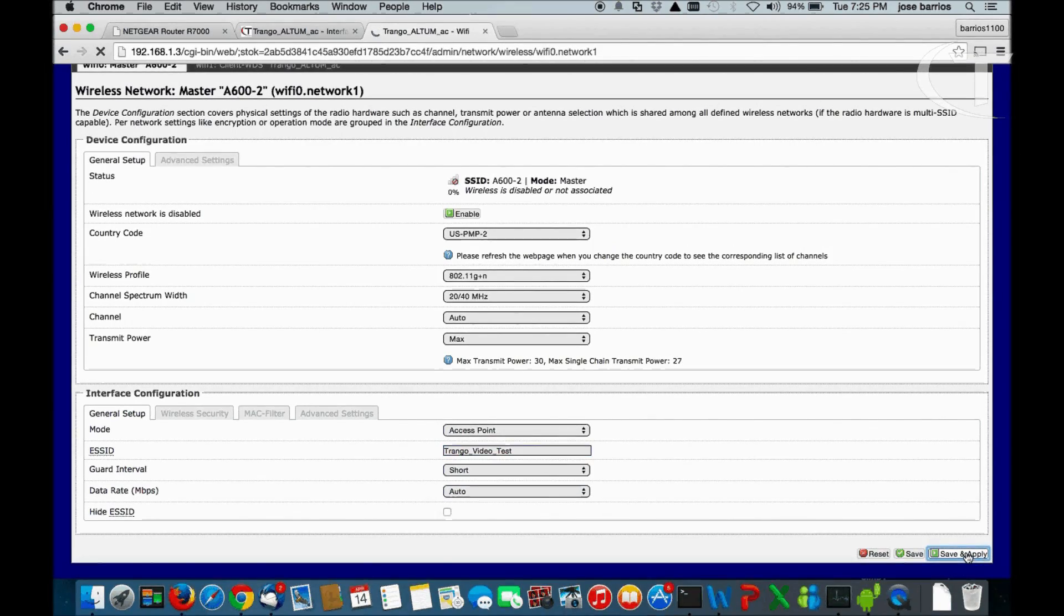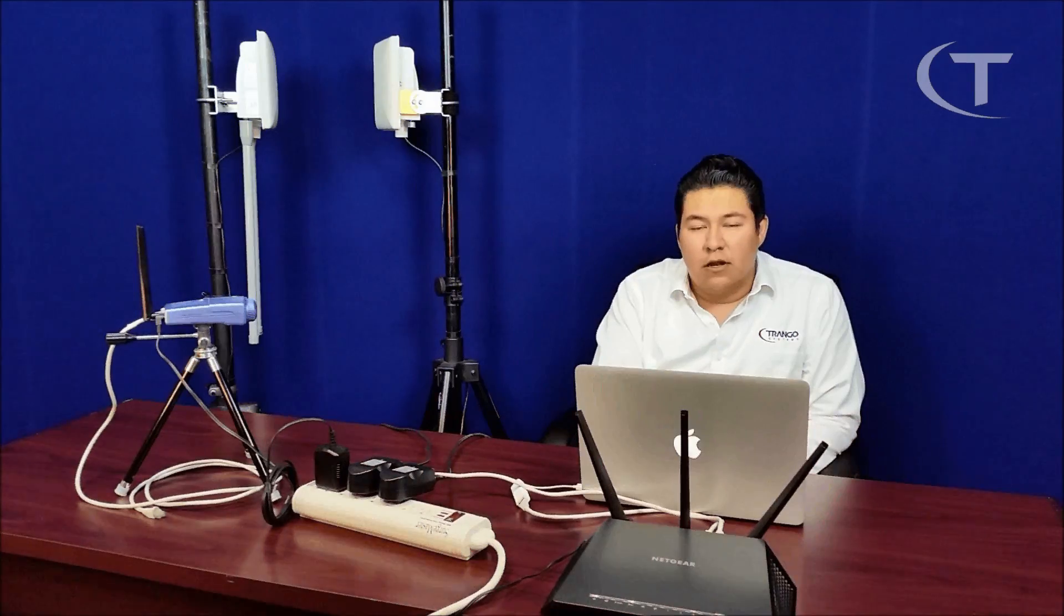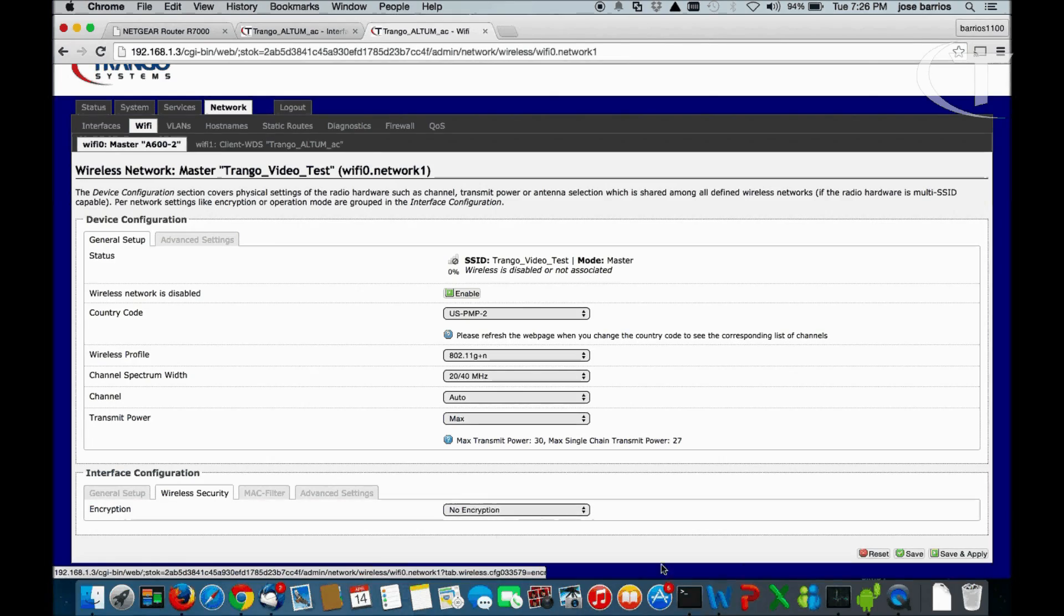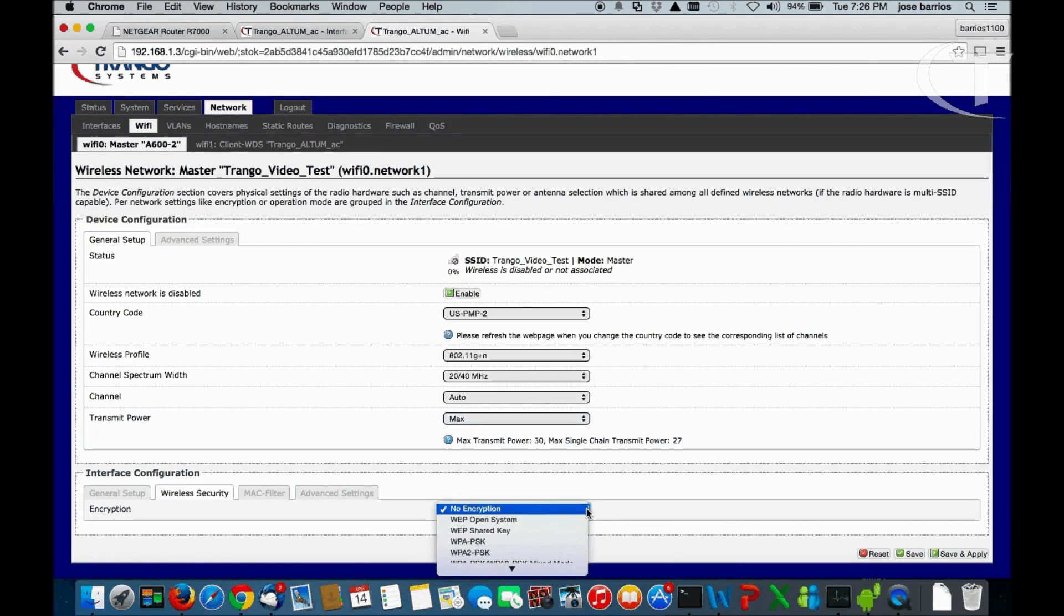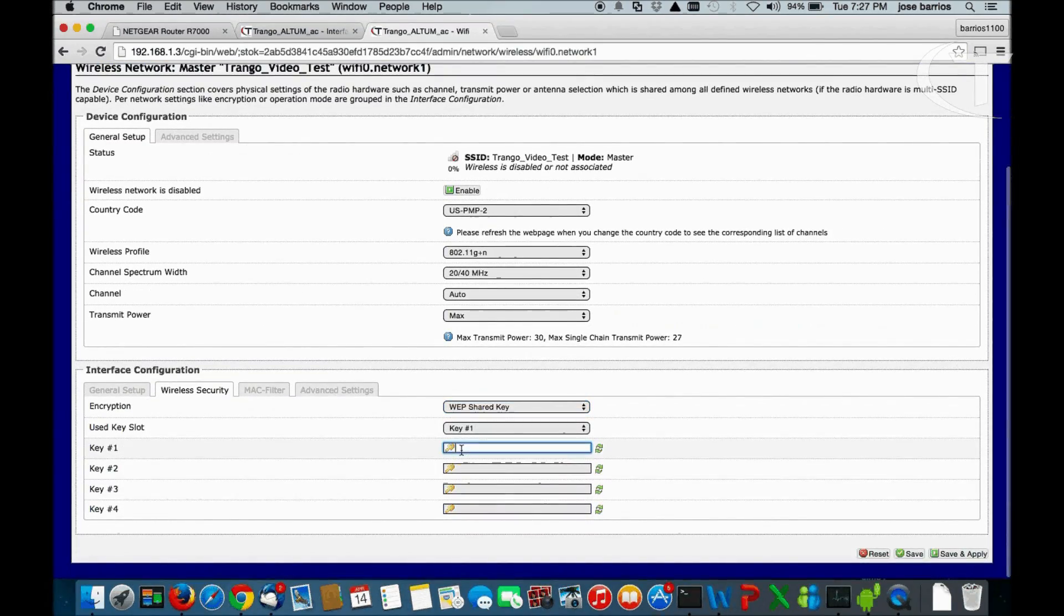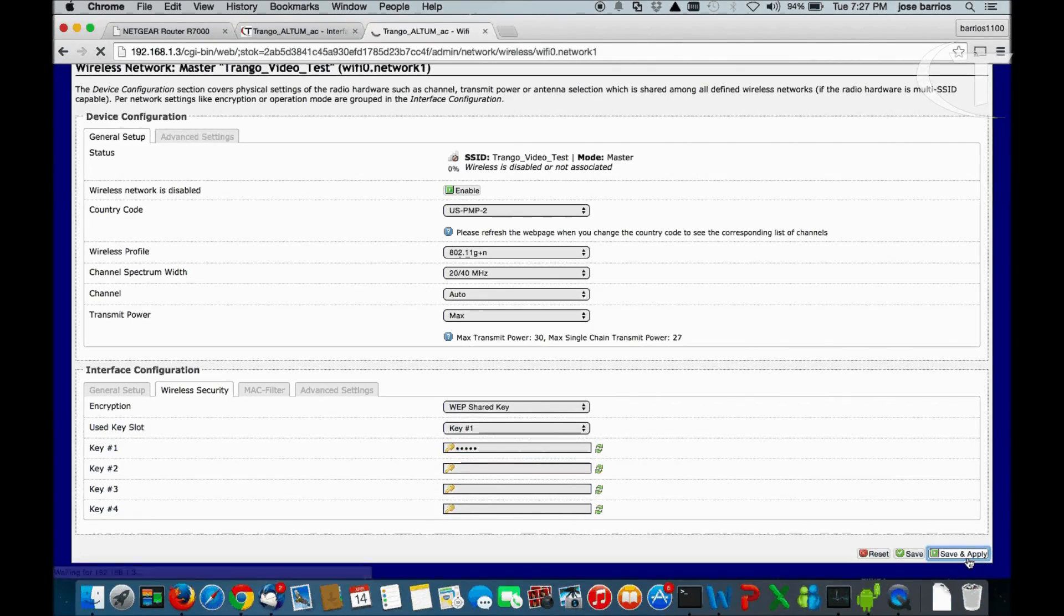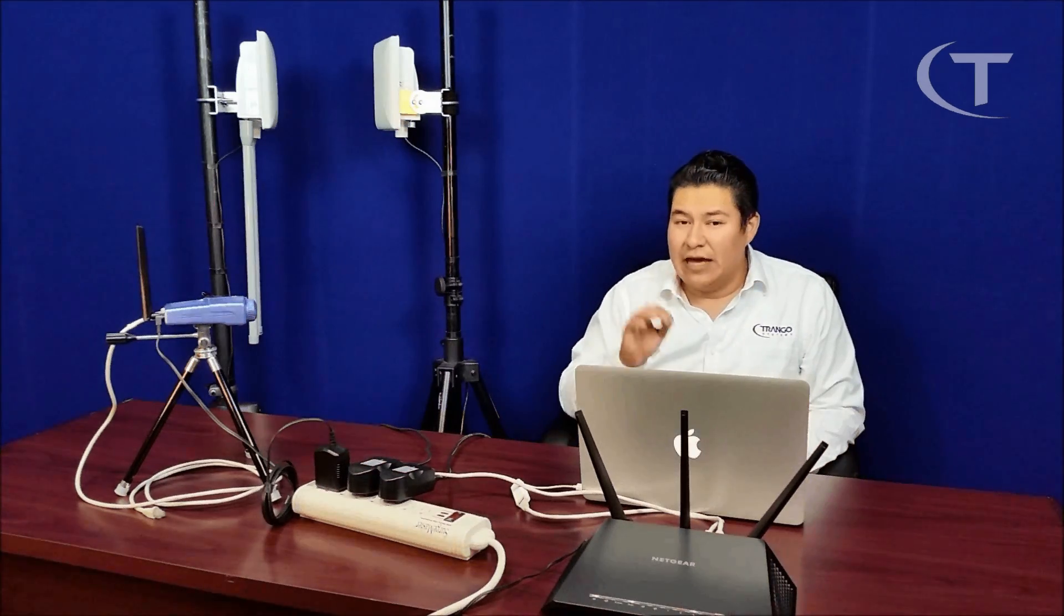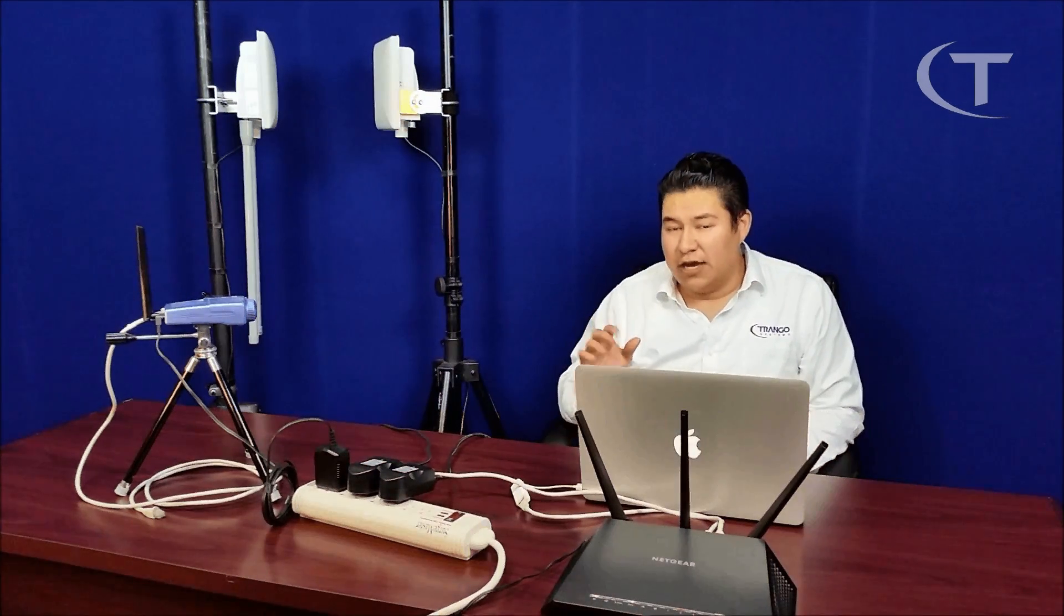We can save and apply. Now if the user wants to, he can enable encryption on the wireless access point. We select a wireless security encryption method. For this, we're going to use WEP shared key just for this video. Save and apply. Remember, all the changes we've done, we have not enabled the actual Wi-Fi access point yet.